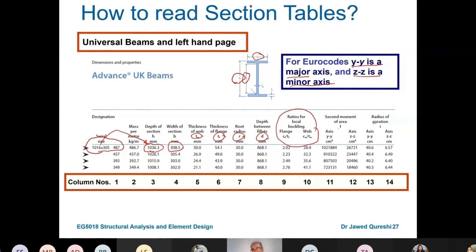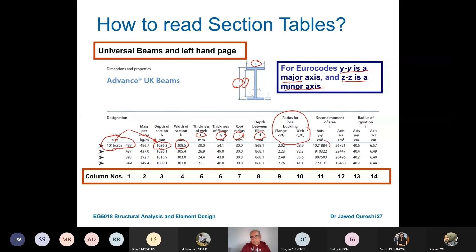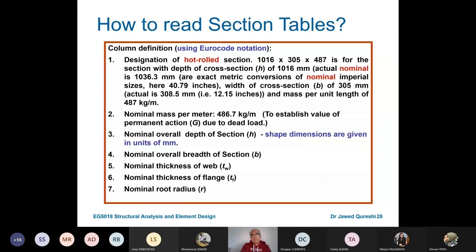Second moment of area, I, is quite important when we work out the sections. Then you have radius of gyration. This is important as well for designing columns. All the information is available here. So when you choose a section, you will have to include this information.